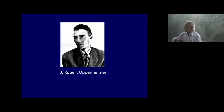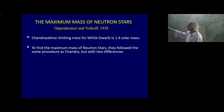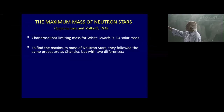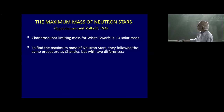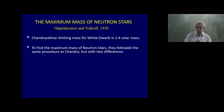Oppenheimer asked the following question: we know there is a maximum mass for white dwarfs, where gravity is supported by the degeneracy pressure of electrons, and Chandrasekhar taught us that mass is 1.4 solar masses. Is there a similar maximum mass for neutron stars? If so, what is it?